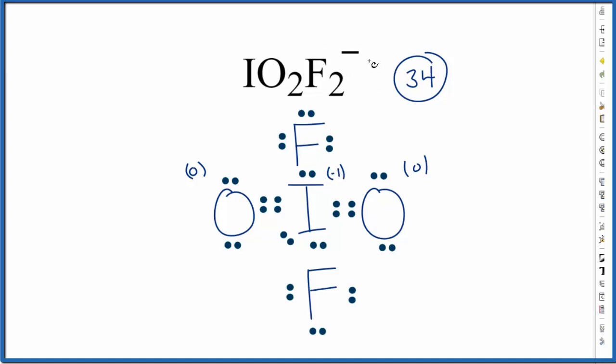You could argue that it's better to have the negative formal charge on the more electronegative element here. At the same time, it feels like the symmetry would be more important. This is typically how you'll see the Lewis structure drawn for IO2F2 minus.